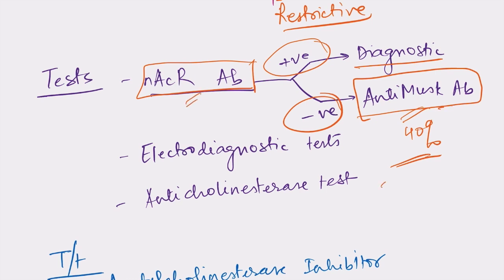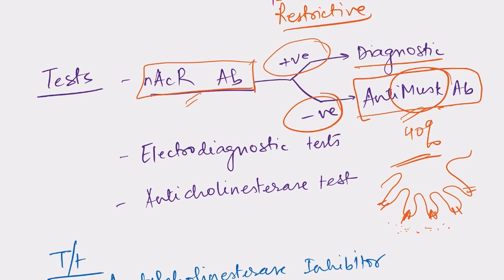MuSK — muscle-specific kinase — is a protein responsible for the movement of nAChRs to the postsynaptic membrane, into the folds of the postsynaptic membrane. Anti-MuSK antibodies interfere with this process and may also lead to myasthenia gravis. So if nAChR antibodies are present, it is diagnostic; if negative, we detect anti-MuSK antibodies.